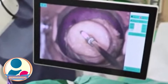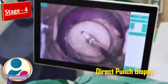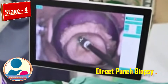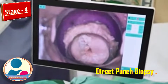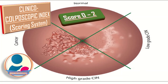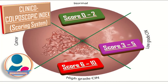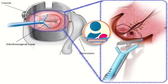Stage four involves direct punch biopsy to gain histological confirmation or definitive treatment. The colposcopic index or scoring system is important: a score of zero to two indicates insignificant lesions; three to five indicates mixed pattern histology with tendency toward CIN 1 or 2; and six to ten indicates high-grade lesions, CIN 3.